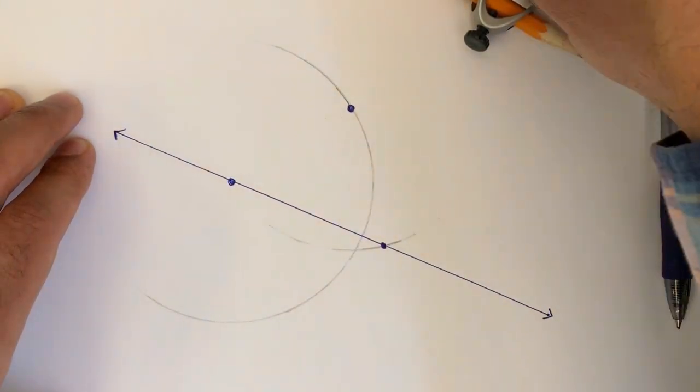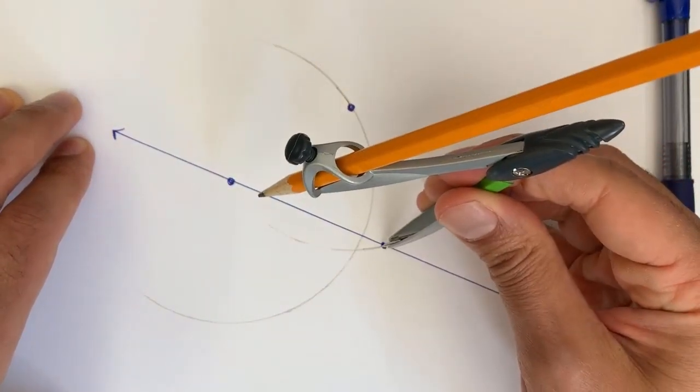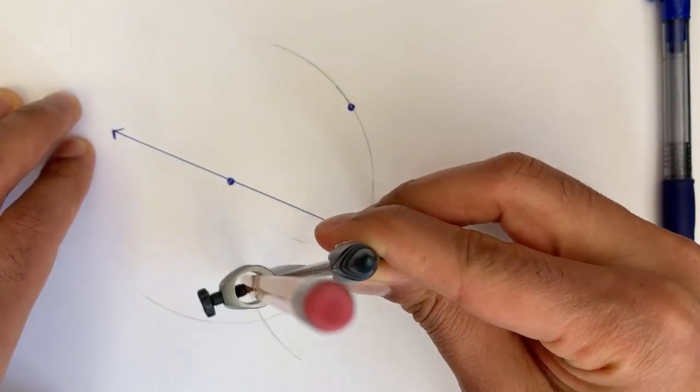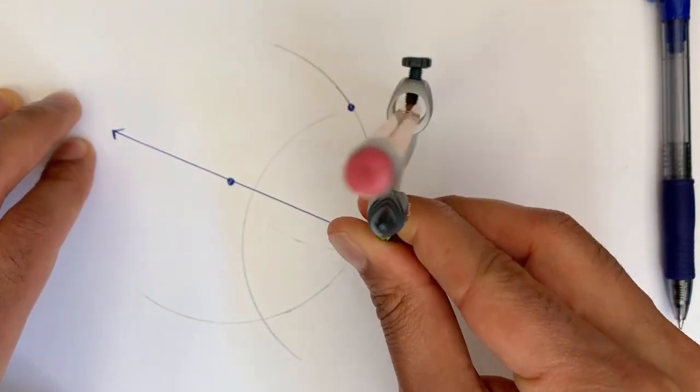And then I can center my compass on that point. And notice I haven't changed the radius of my compass to draw another arc like this.